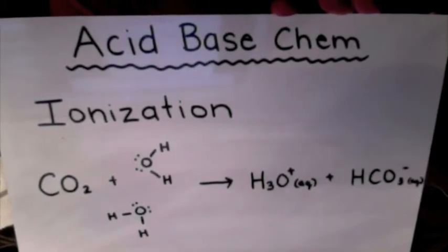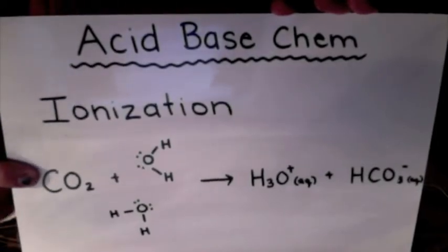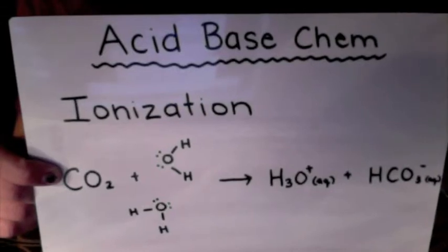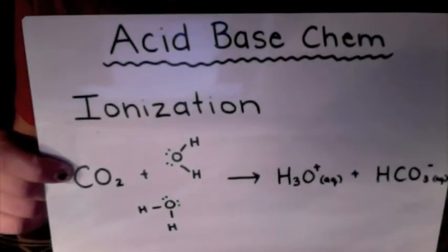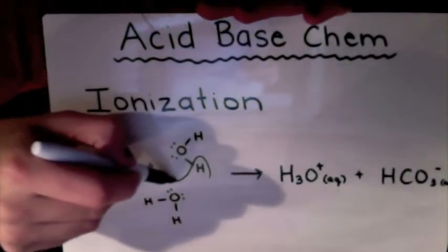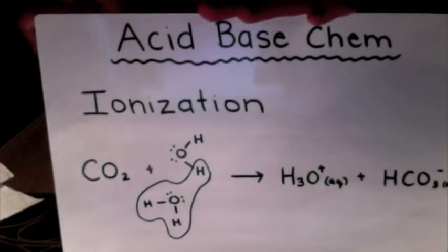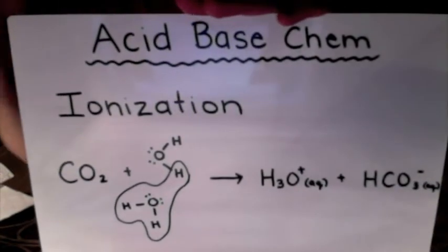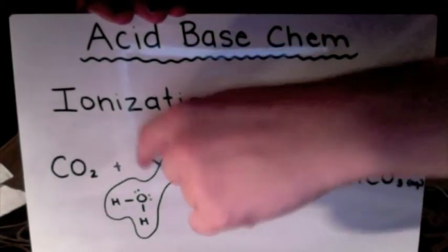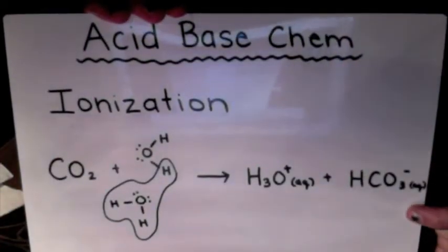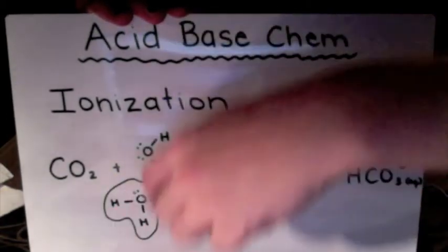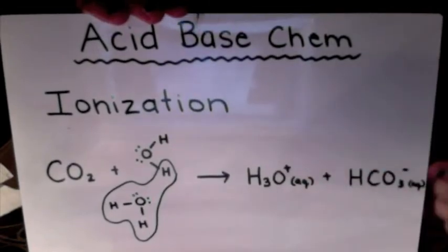The final thing that might happen with an ionization equation is that you get a compound that doesn't actually have a hydrogen in it. You're still going to make H₃O⁺, but you're going to require two water molecules. What's going to happen is you pull off a hydrogen from one of those water molecules to create your H₃O⁺. Now you have an OH remaining, which you add to your CO₂ to come up with HCO₃⁻. So we've created H₃O⁺ and HCO₃⁻ using two water molecules.